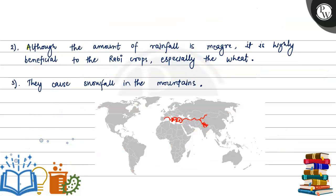The second point: although the amount of rainfall is meager and less than monsoon winds, it is highly beneficial to the rabi crops, especially wheat.